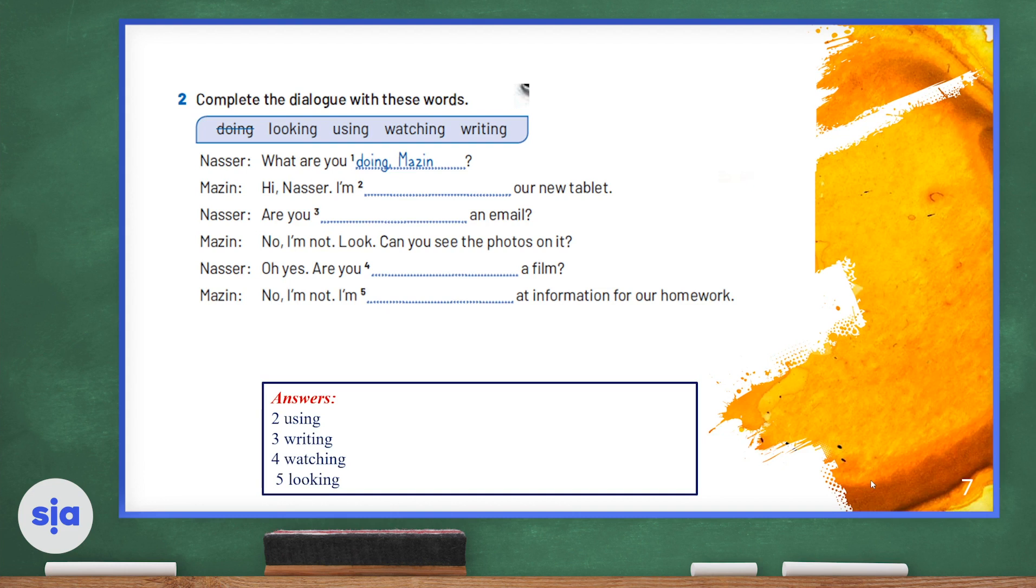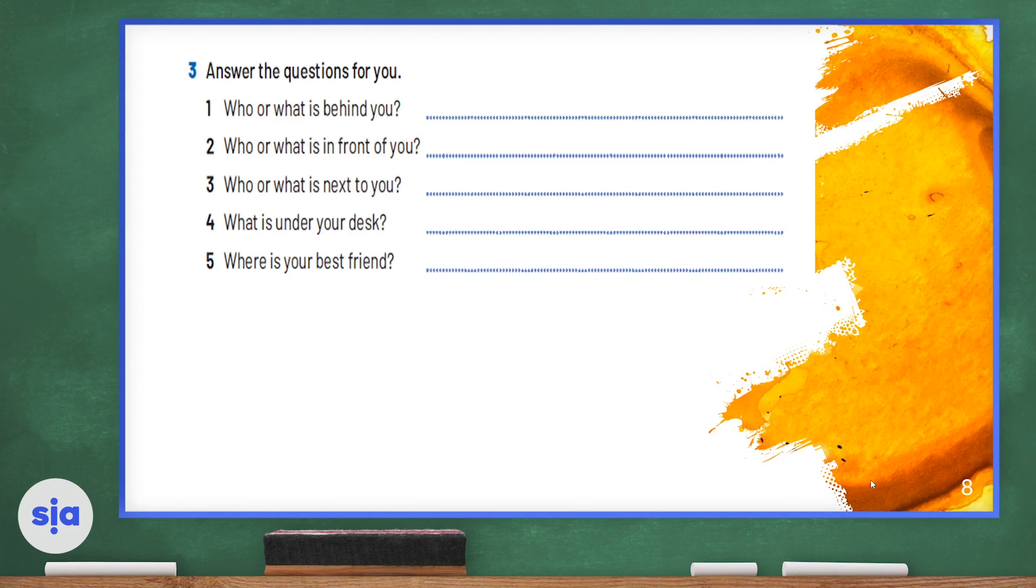Now we will move on to answer the questions for you. Number one: who or what is behind you? So I want you to look behind you and write down who is behind you or what is behind you. In my case, I have a chair behind me. What about you? Number two: who or what is in front of you? Right now I have a desk in front of me. What about you? Who or what is in front of you?